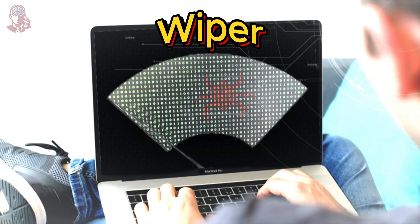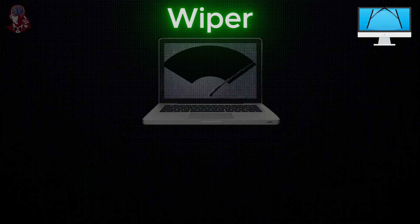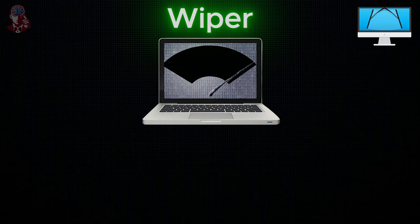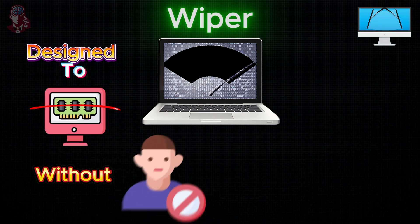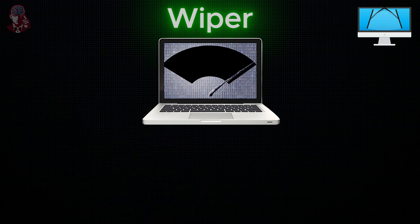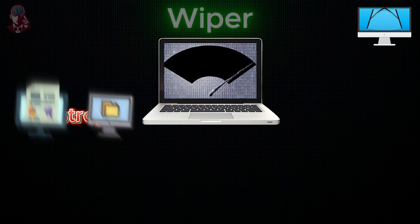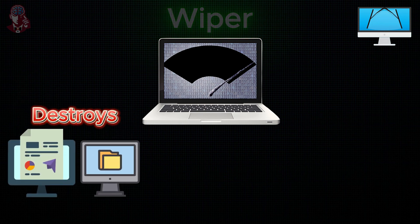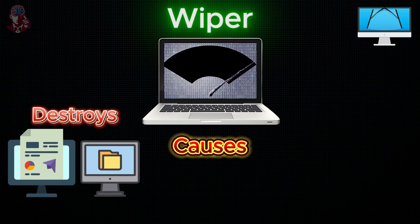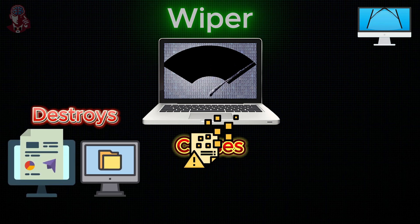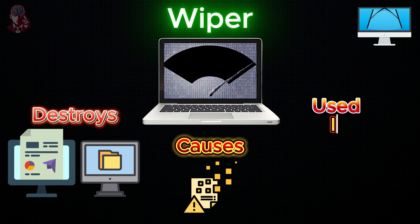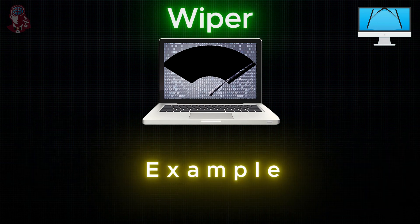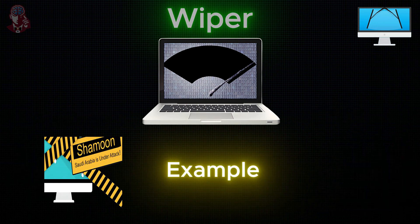Wiper: A wiper is a type of malware designed to erase a computer's memory without the user's consent, destroying all useful information in the process. It causes irreversible data loss and is often used in cyber warfare. Example: Shamoon, which targeted the Saudi oil industry.